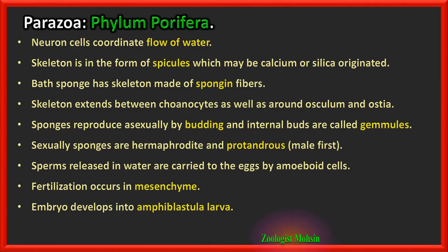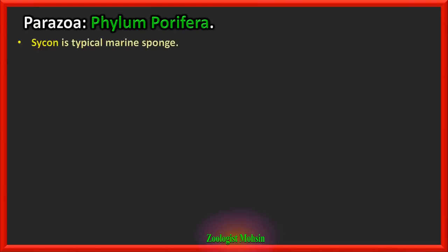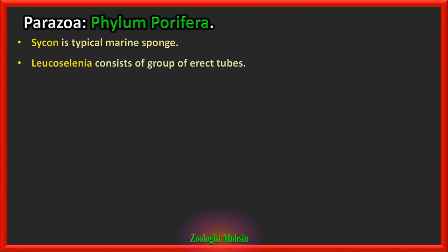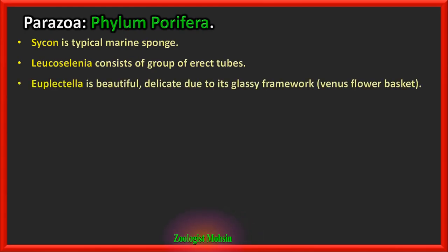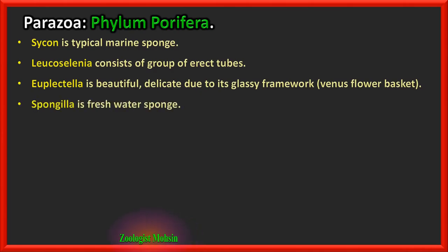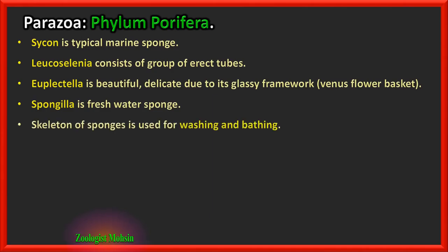The embryo develops into an amphiblastula larva in some sponges — so the larva of sponges is amphiblastula. Sycon is a typical marine sponge. Leucosolenia consists of a group of erect tubes. Euplectella is beautiful and delicate due to its glassy framework and is called Venus' flower basket. Spongilla is a freshwater sponge — very important to remember as one of the few freshwater sponge species.